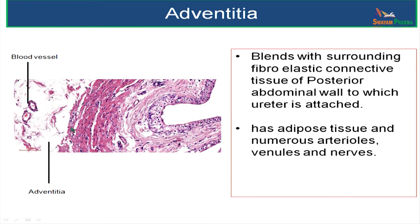This layer has got adipose tissue, numerous arterioles, venules, and nerves. That is the outermost layer — adventitia — which is nothing but the connective tissue layer.